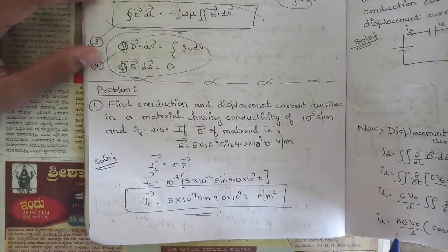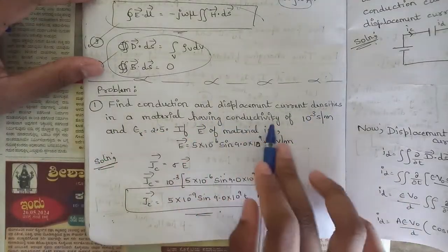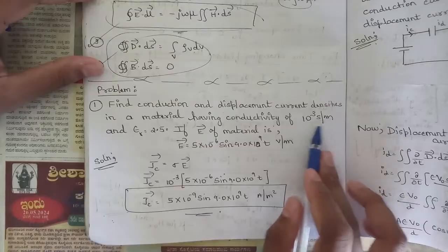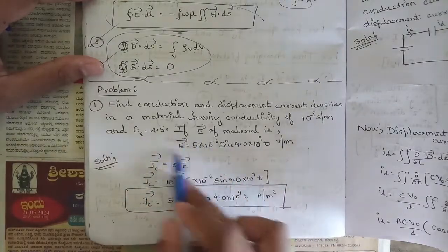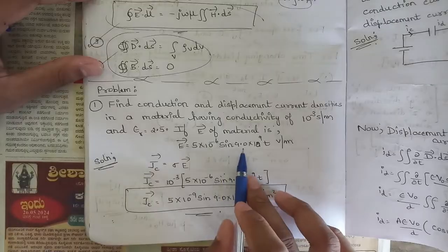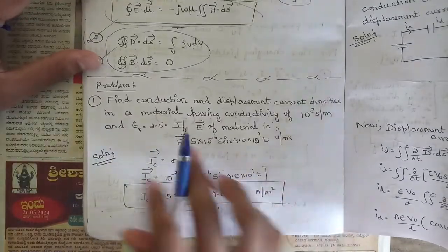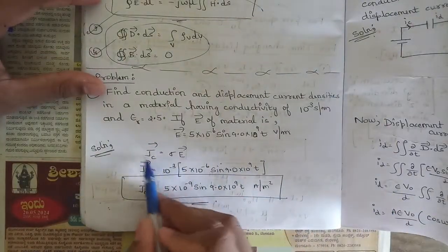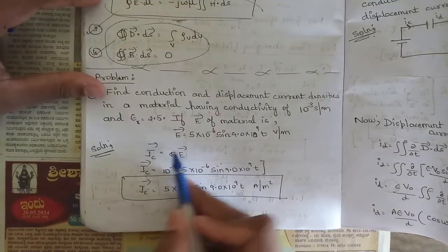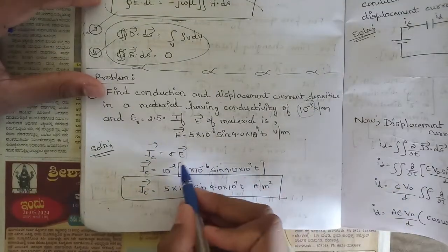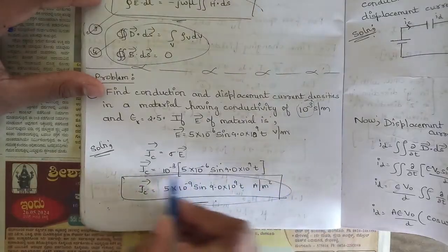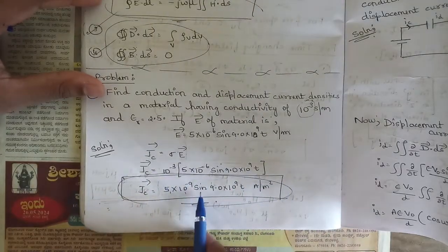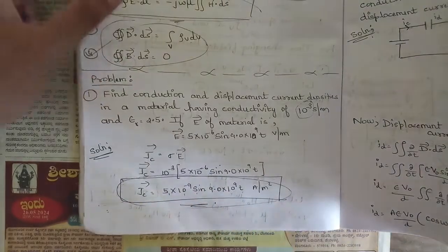Now let's solve a simple problem on conduction and displacement current densities. Find Jc and Jd in a material with conductivity σ = 10⁻³ S/m, εr = 2.5, and E = 5×10⁻⁶ sin(9×10⁹t) V/m. Using Jc = σE: Jc = 10⁻³ × 5×10⁻⁶ × sin(9×10⁹t) = 5×10⁻⁹ sin(9×10⁹t) A/m².